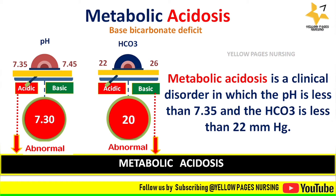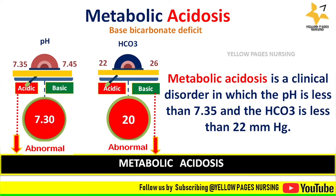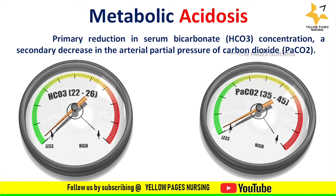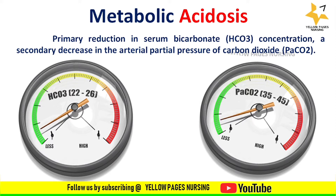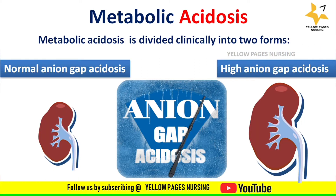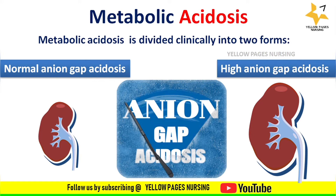Metabolic acidosis is characterized by a primary reduction in serum bicarbonate concentration and a secondary decrease in the arterial partial pressure of carbon dioxide. Clinically, it is divided into two forms: high anion gap acidosis and normal anion gap acidosis.